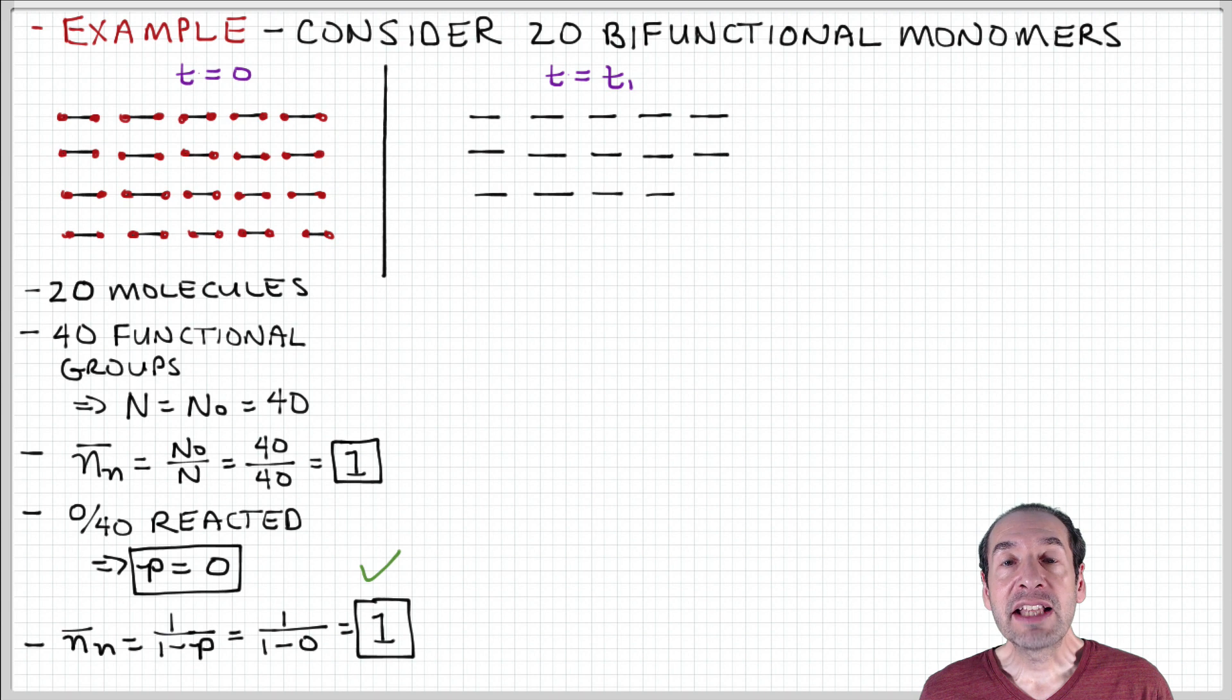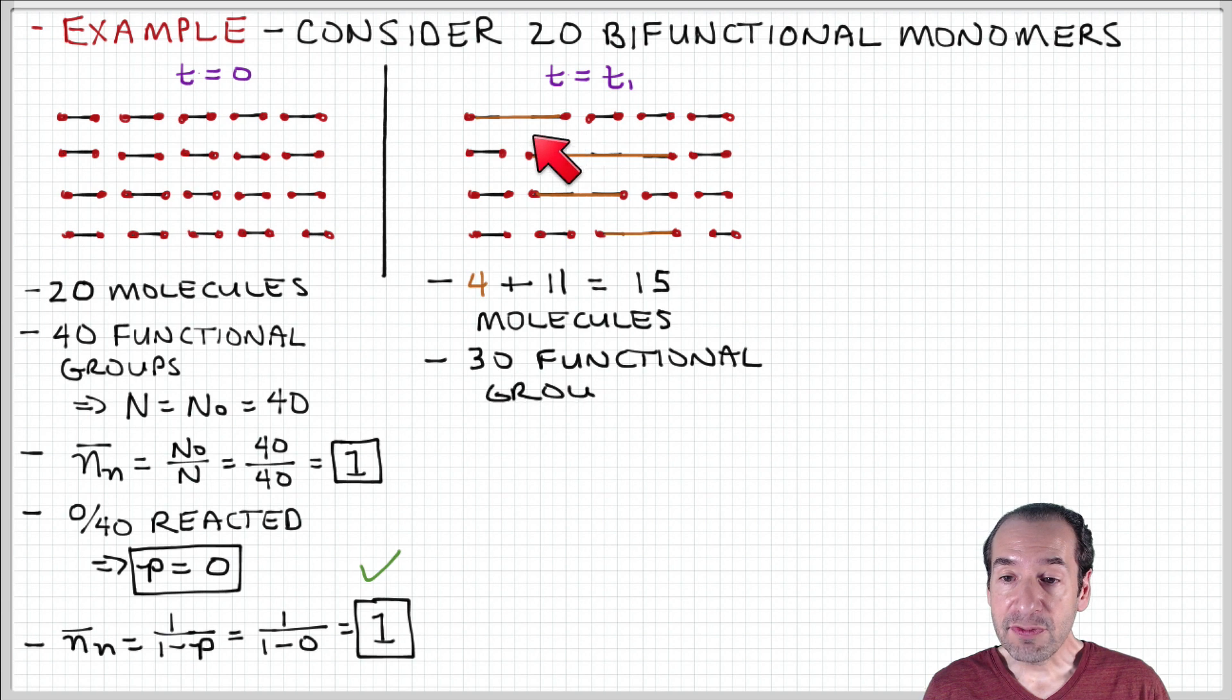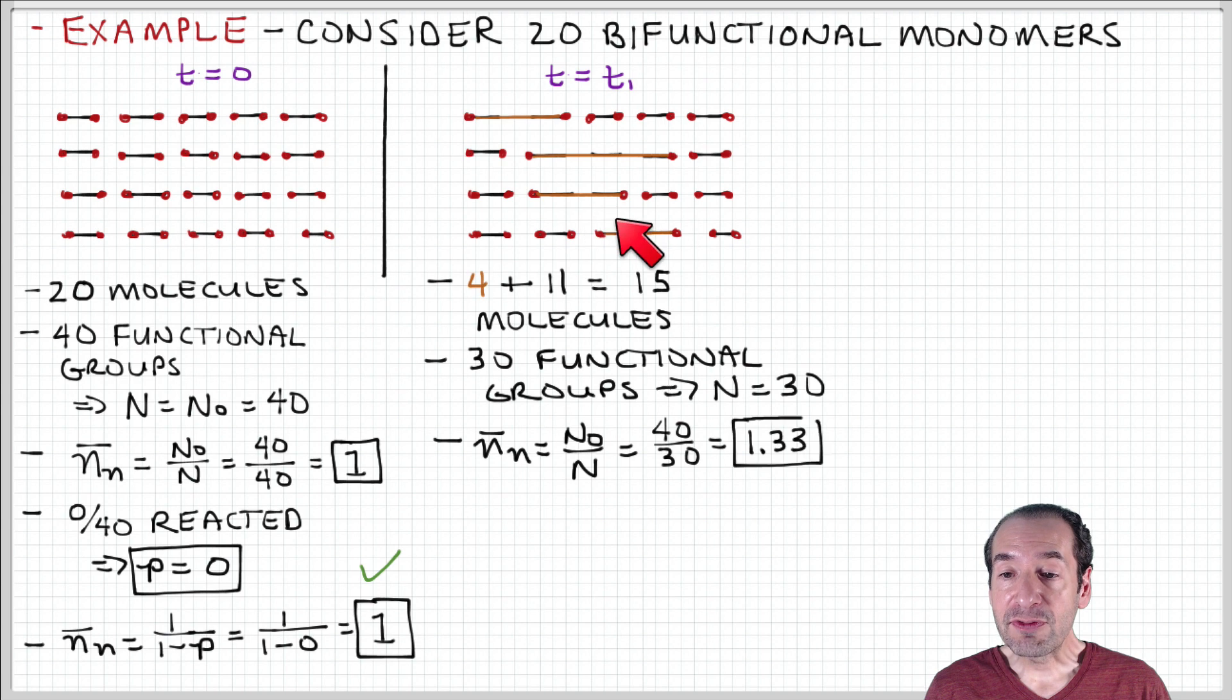Now, let's take a look at some later time where some reactions have occurred between these monomer units. In particular, it looks like these two monomer units have joined, these three monomer units have joined, and two monomer units have joined in the bottom two rows of the array. So now we want to count the number of molecules that we have present at this time T1. We have 4 molecules that have emerged as a consequence of reaction between functional groups.